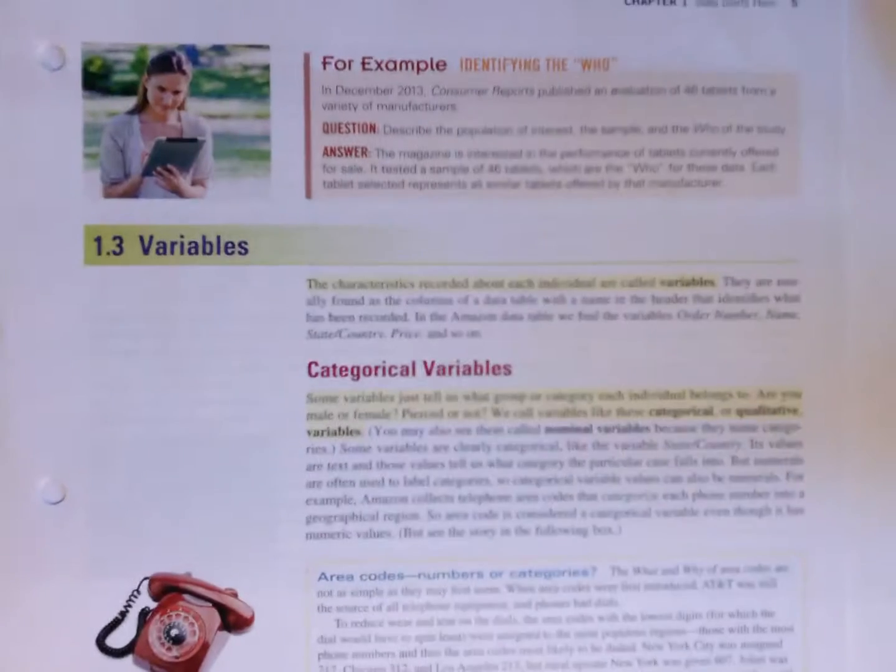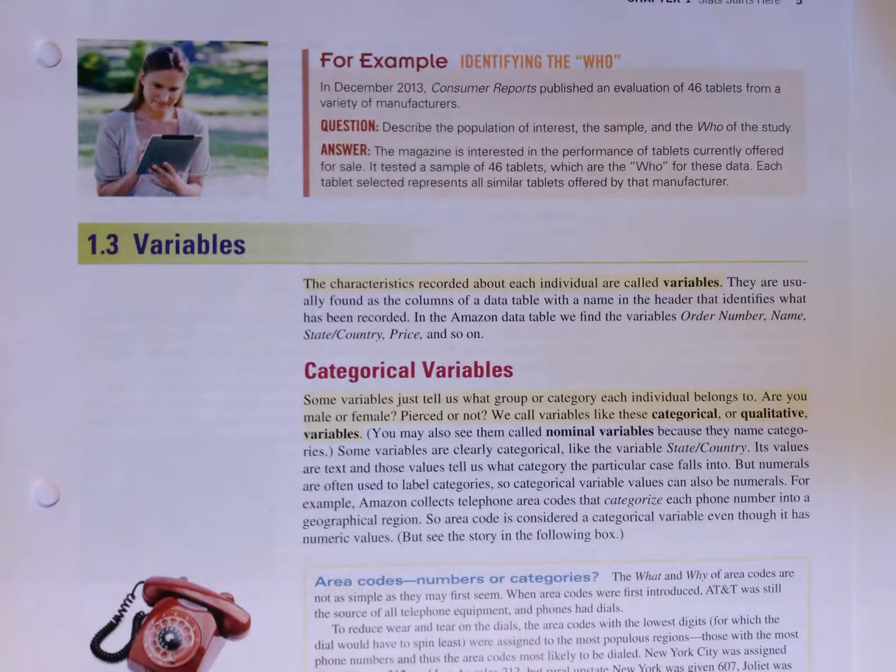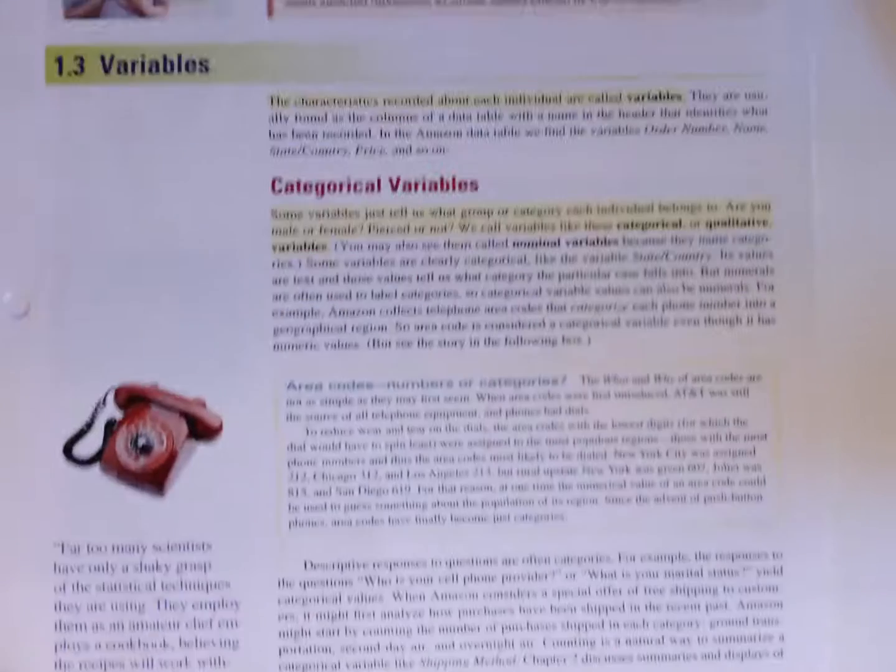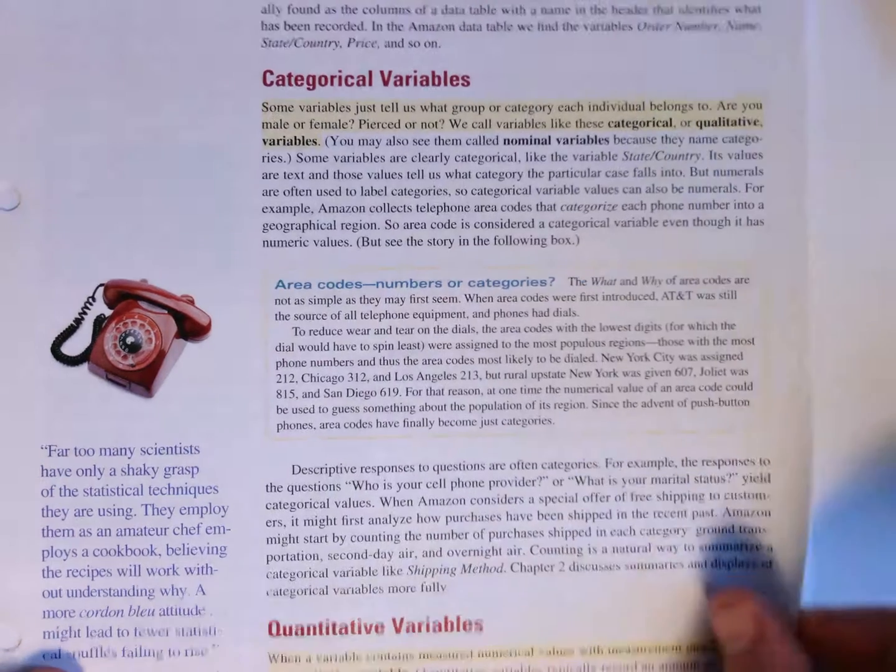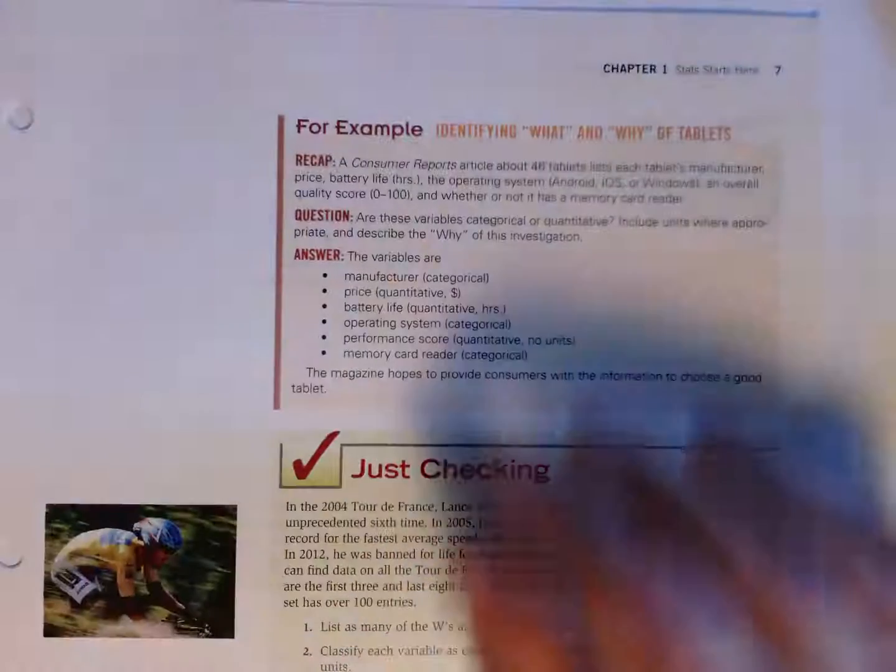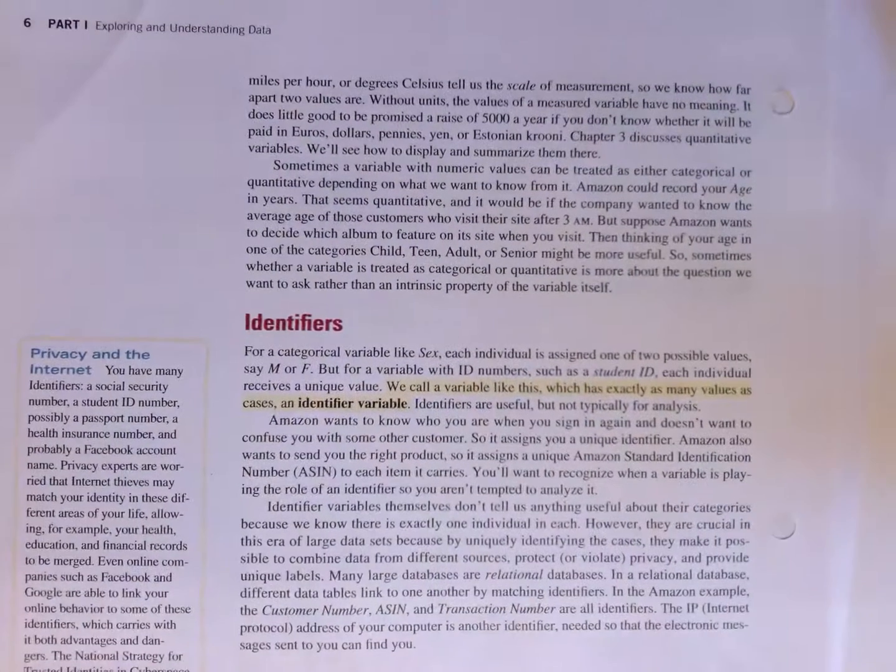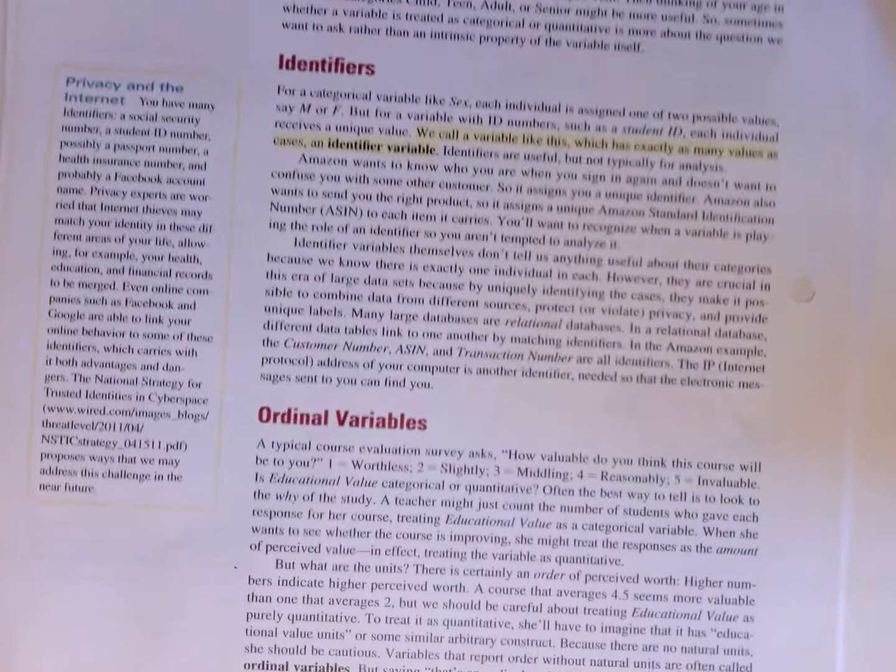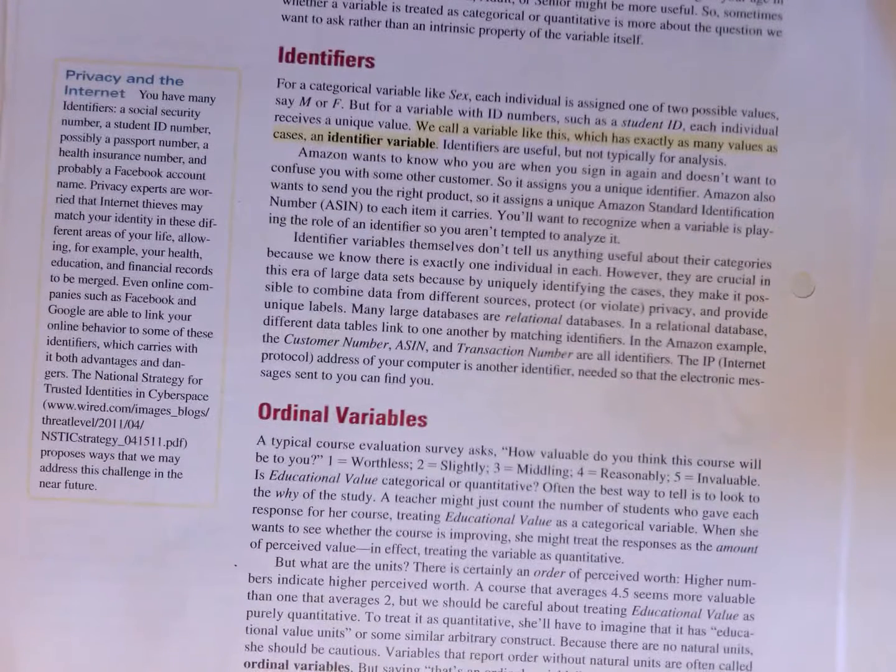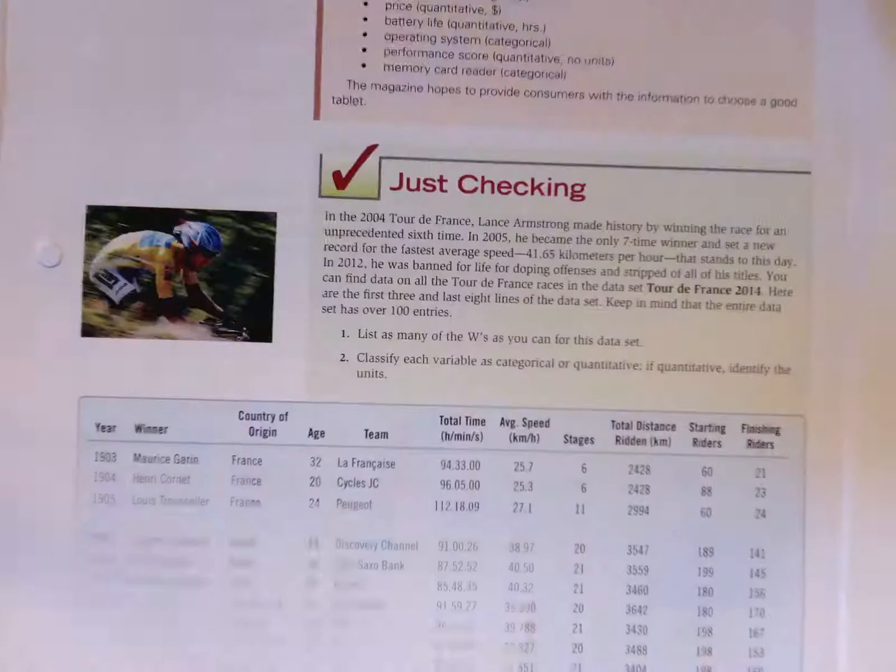Starting again from scratch, we have the idea of variables, categorical variables, which we'll be seeing in chapter two, quantitative variables that get introduced in chapter three. Much of this may be a review for you, so we'll be moving fairly quickly through this as we proceed. We have these idea of identifiers, ordinal variables. We'll talk more about data types as we proceed through the semester, but this chapter provides a brief overview of those.